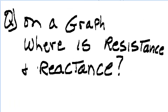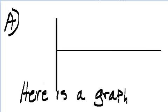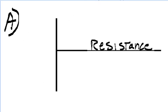On a graph, where is resistance and reactance? Here is a graph. Here is resistance on the x-axis. Here is reactance on the y-axis.